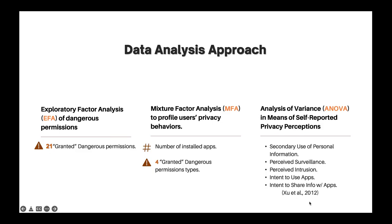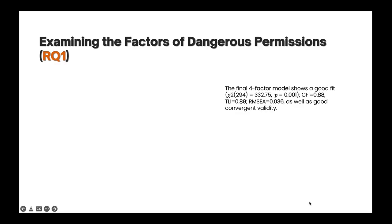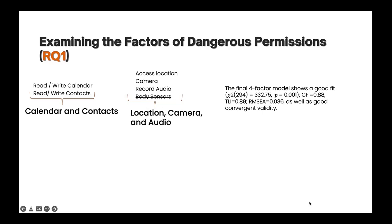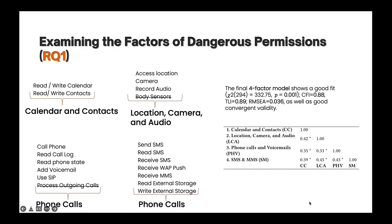The five self-reported measures were: secondary use, perceived surveillance, perceived intrusion, intent to use apps, and intent to share info with apps as dependent variables, and the profile as the independent variable. Here we can see the underlying dimensionality of the 21 dangerous permissions using the EFA. The first factor groups permissions related to reading or writing from the user's calendar and contacts. The second factor groups permissions related to accessing users' location, camera, and recording audio. The third factor was a group of permissions related to phone calls, read call state, use SIP, and add a voicemail. The fourth factor was a group of permissions such as sending, reading, and receiving SMS, MMS, and WA push. Looking at the table for the factor correlation, all the factors are significantly positively correlated with one another.